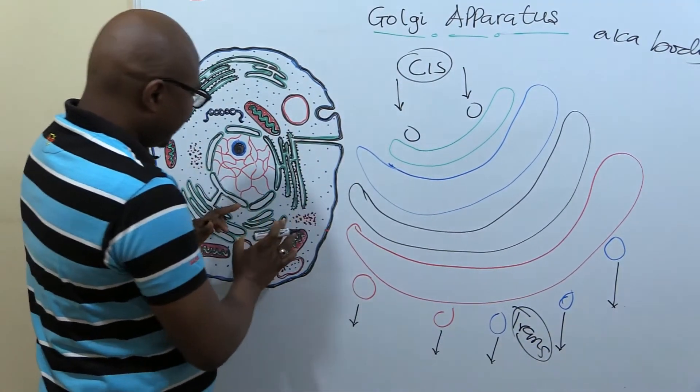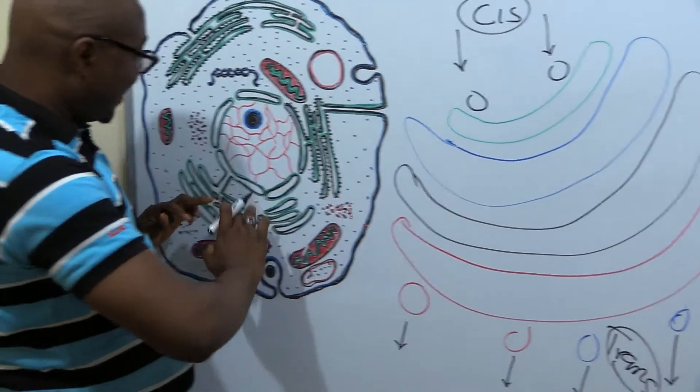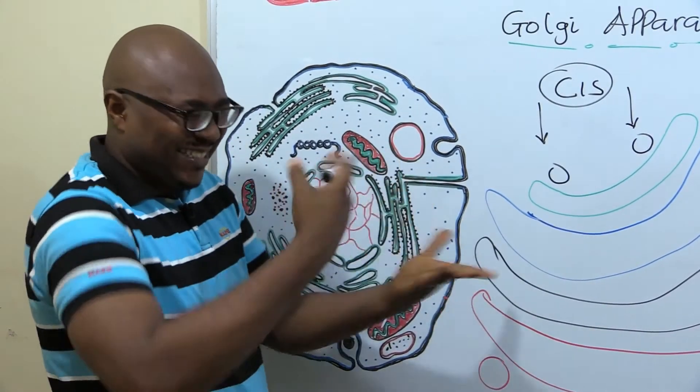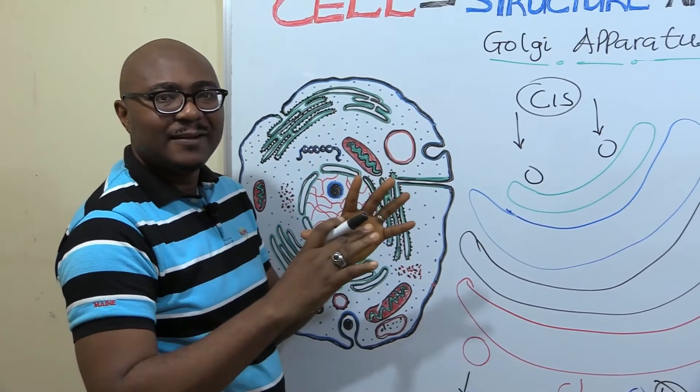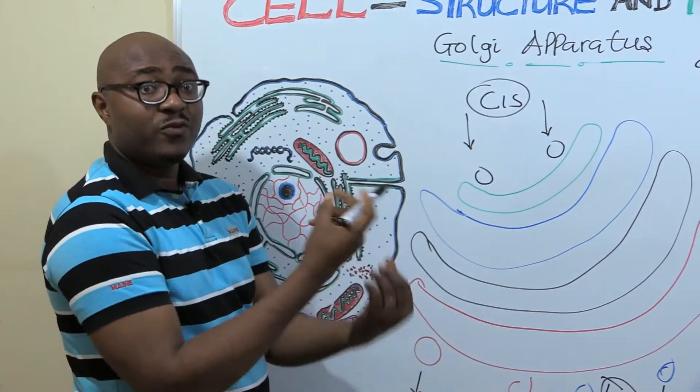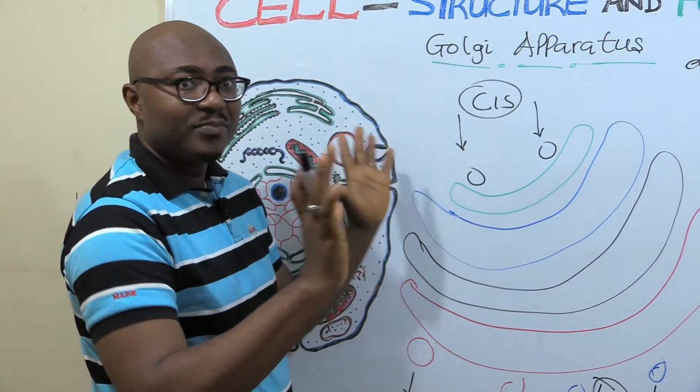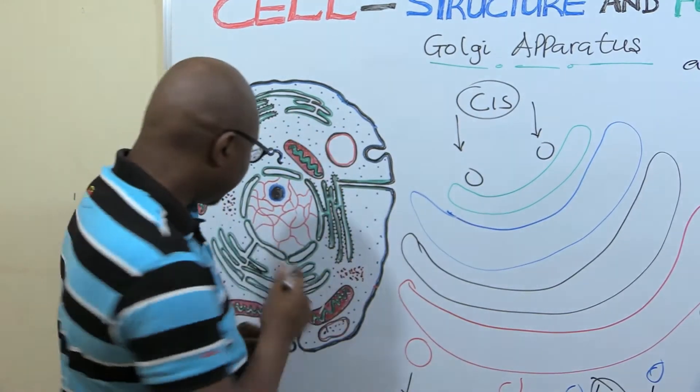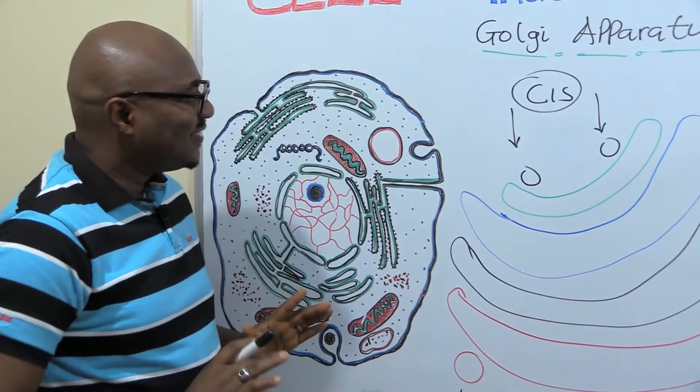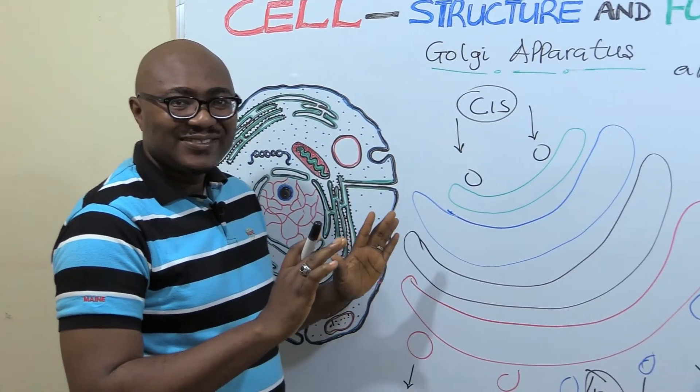This cis end has a very close relationship with the endoplasmic reticulum. Now the endoplasmic reticulum, as we know, is the manufacturing center. The rough endoplasmic reticulum synthesizes, manufactures proteins. The smooth one manufactures lipids.